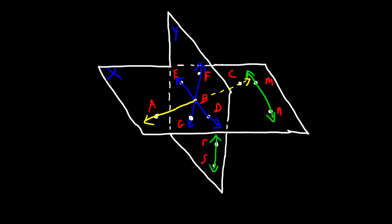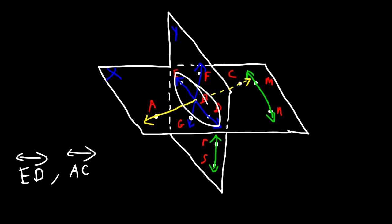It takes at least three non-collinear points to determine a plane. We can also determine a plane using two lines. Line ED and line AC determine which plane? ED is found in both planes X and Y, but AC is in plane X and not plane Y.